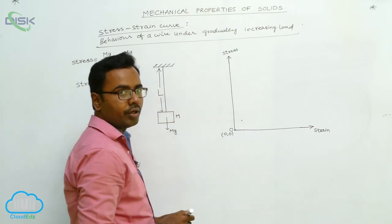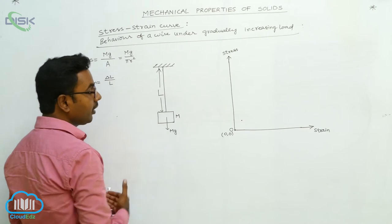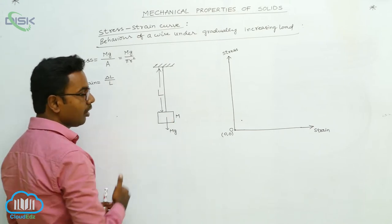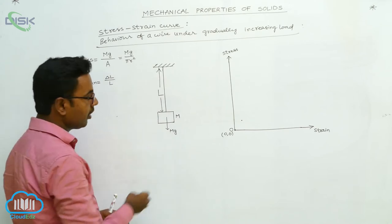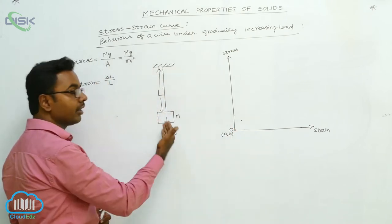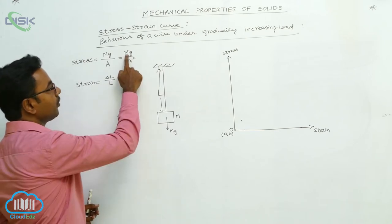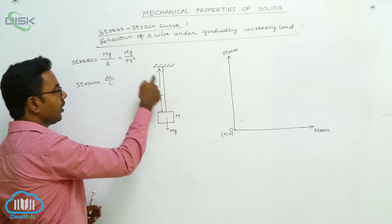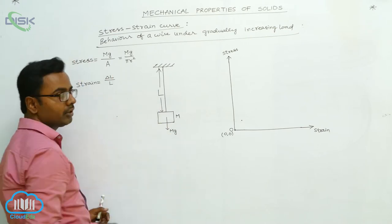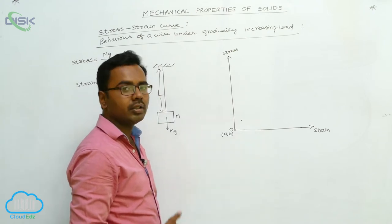Like this, for every load we attach, we increase the loads in equal steps. First we attach 100 grams, find stress and strain. Then we add more 100 grams — total load is now 200 grams — and find the new stress and strain, taking the corresponding point in the graph. Then we increase by another 100 grams, making total 300 grams. For 300 grams: stress = (300 g × 9.8) / (π × r²), substituting all values gives the stress. The elongation ΔL divided by L gives the strain. All corresponding points are joined to get the graph.